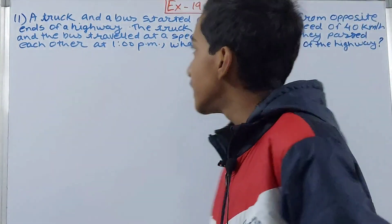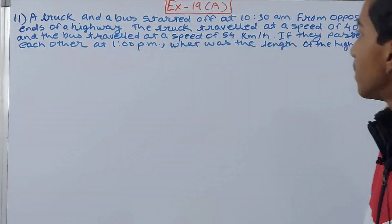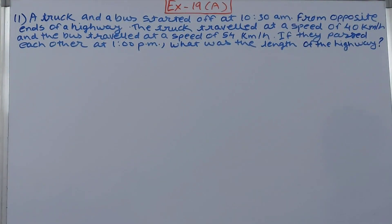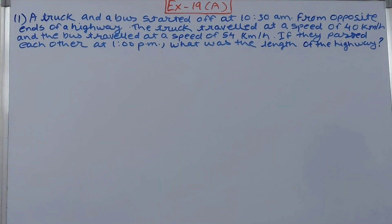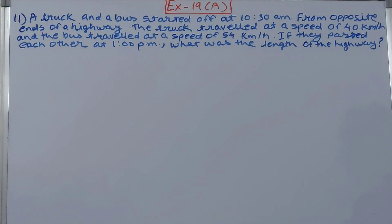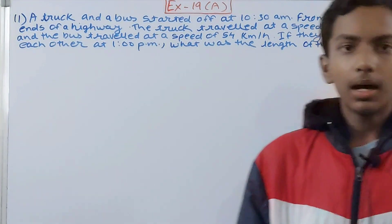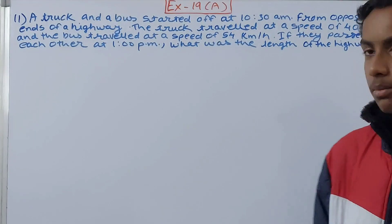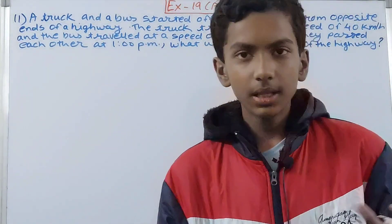The question says: a truck and a bus started off at 10:30 a.m. from opposite ends of a highway. The truck traveled at a speed of 40 kilometers per hour and the bus traveled at a speed of 54 kilometers per hour. If they passed each other at 1 p.m., what was the length of the highway?